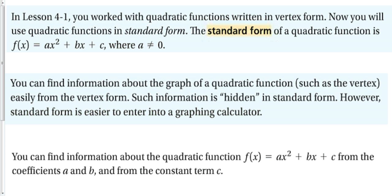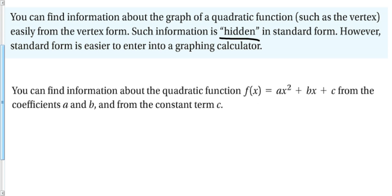In 4.1 we worked with quadratic functions written in vertex form. Now we're going to use quadratic functions in standard form: ax² + bx + c, which we'll see throughout the rest of chapter 4. We can find information about the graph — like the vertex — easily from vertex form, but such information is hidden in standard form. However, standard form is easier to enter into a graphing calculator. Using the coefficients a and b and the constant term c, we can figure out what's going on in this function.